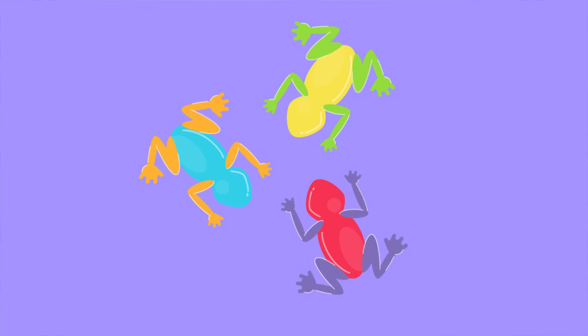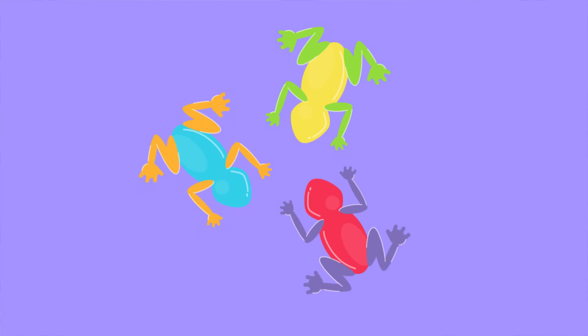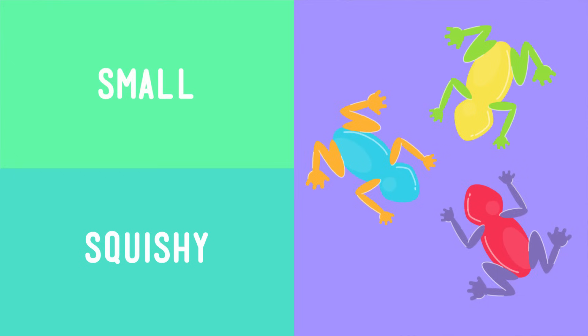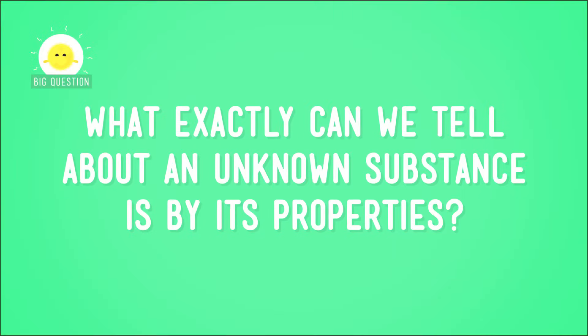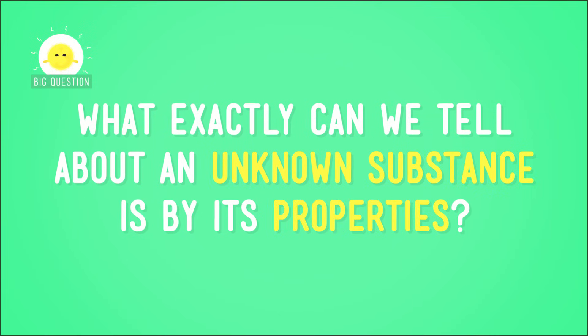If I want a gummy frog, I'm going to feel around for something that's kind of small, squishy, and frog-shaped. But how else can we use this idea in other non-candy-related contexts? Does it work on school supplies? Breakfast cereals? What exactly can we tell about an unknown substance by its properties?